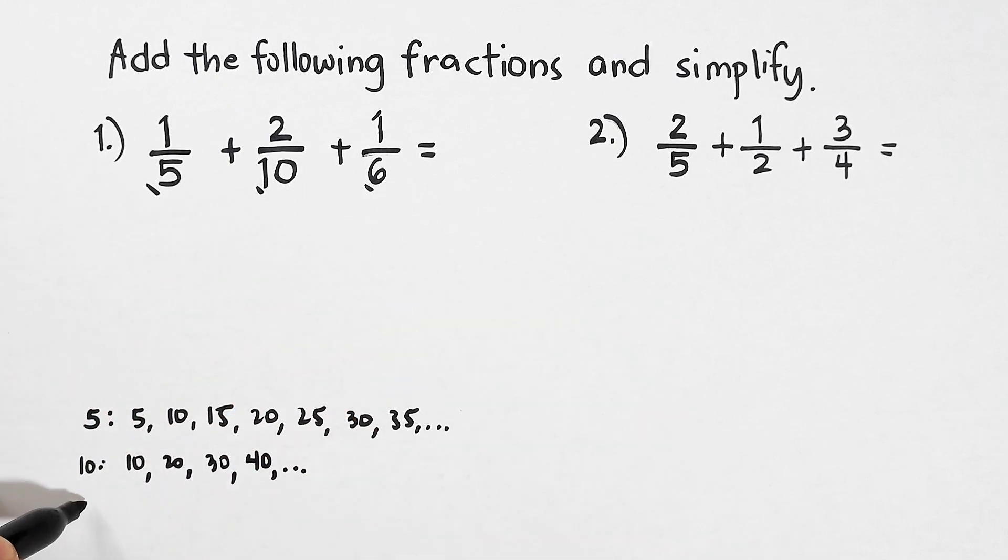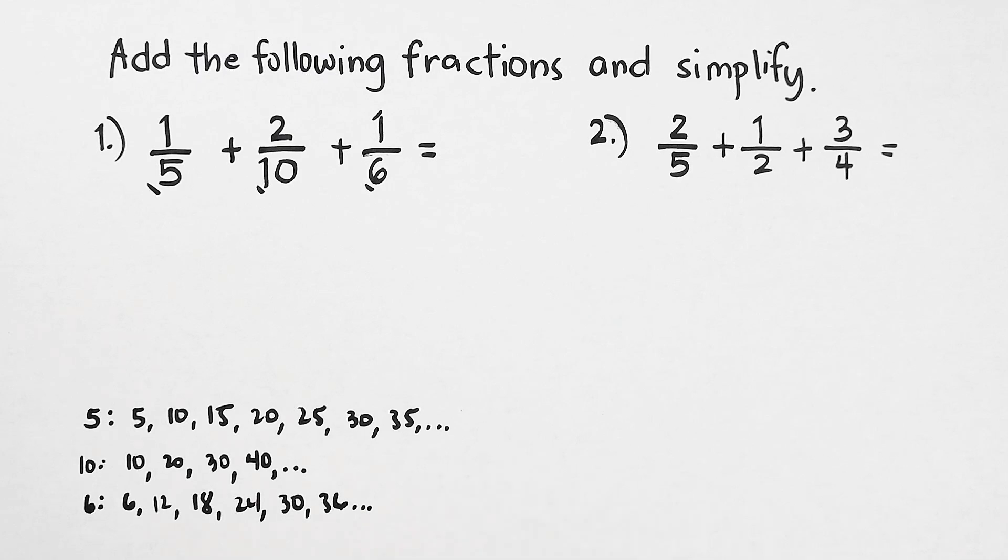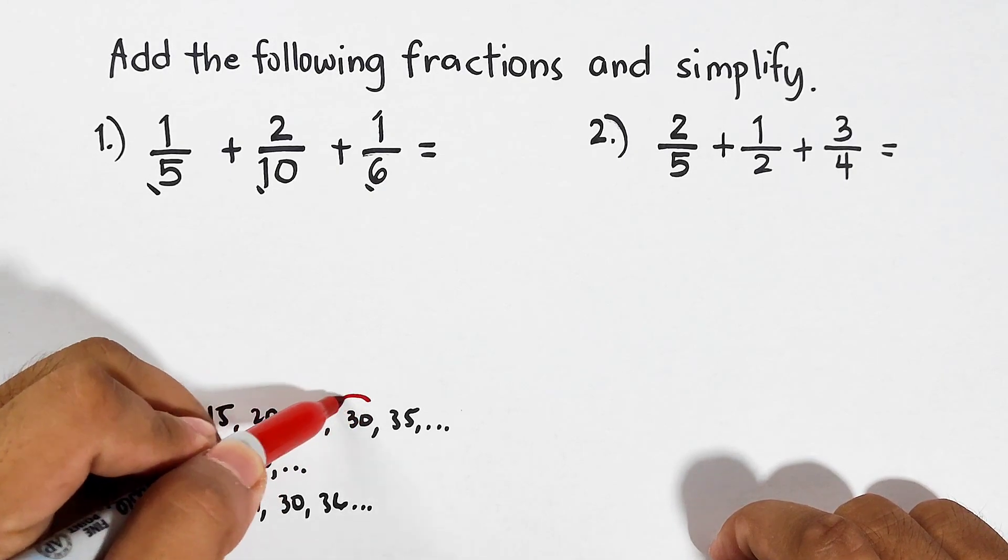all the multiples of 6, and these are 6, 12, 18, 24, 30, 36, and so on. As you can see, we can identify the least common multiple between 5, 10, and 6, and this is 30.